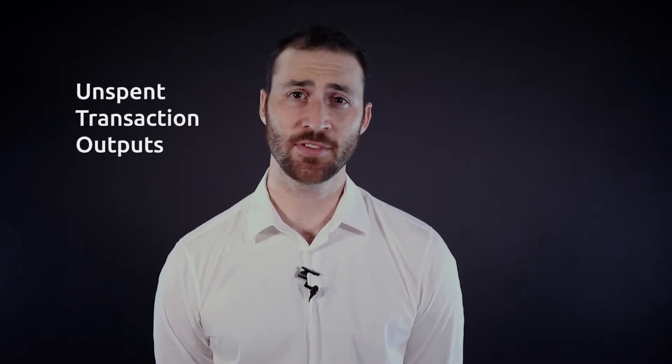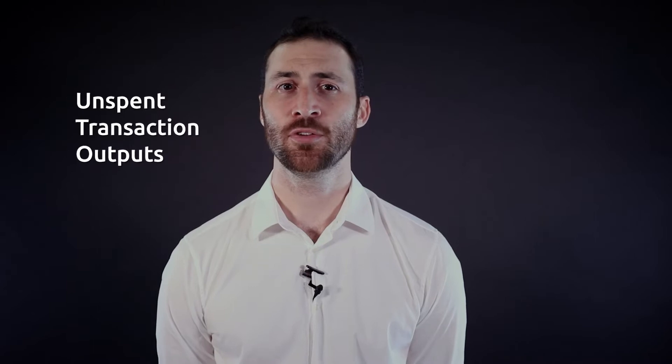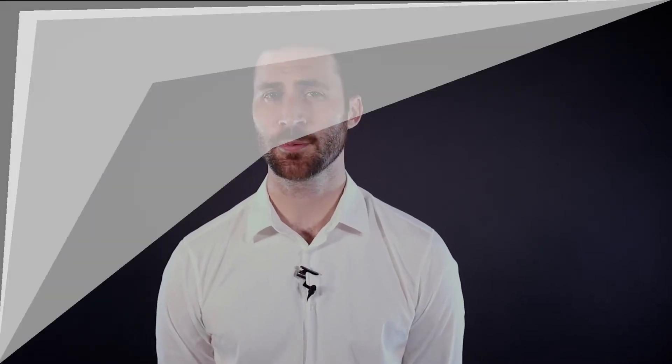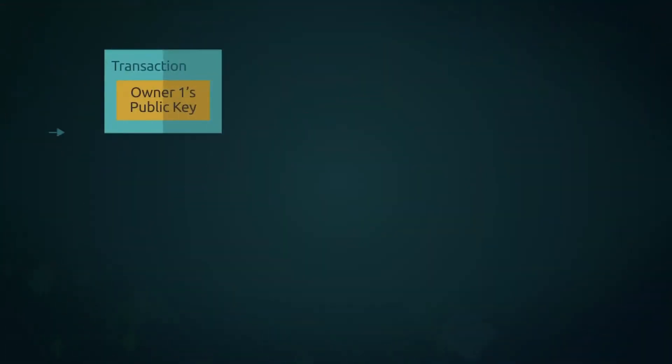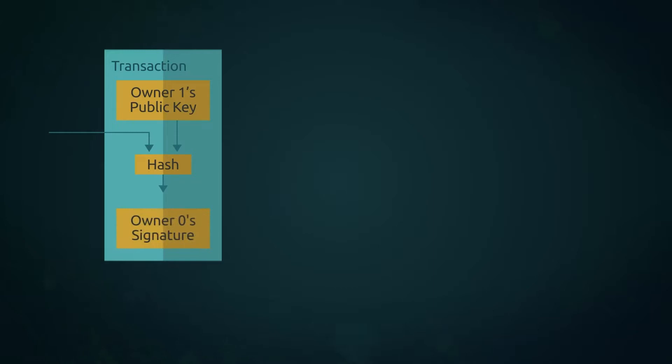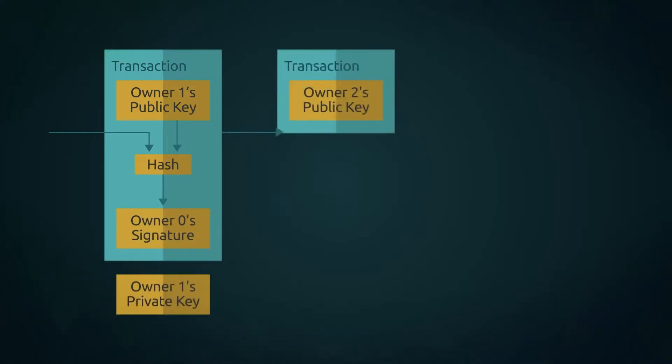Bitcoin transactions are conducted by utilizing unspent digital coins called unspent transaction outputs, or UTXOs. These UTXOs are used as inputs for a transaction and require a solution that unlocks the script that secures the coins within them. As these coins are transacted, a chain of signatures is formed as each new unlocking script and public address is added to the hash of the coin.